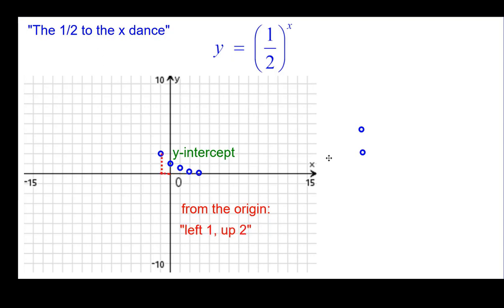Going in the other direction. Left one up two, because one half to the negative one power would be the reciprocal, which is two. Left two up four, and left three up eight.